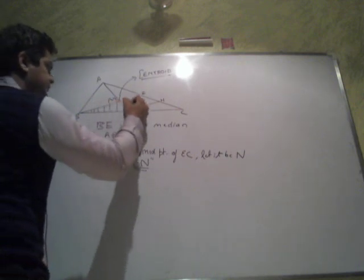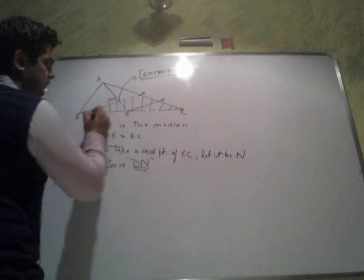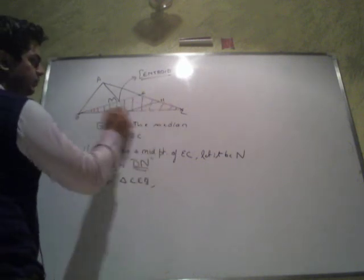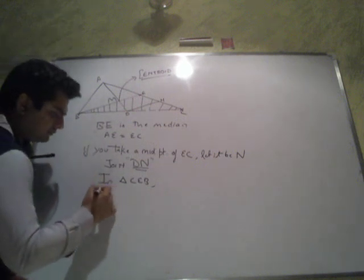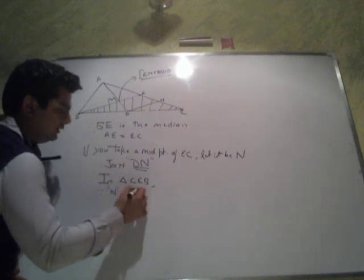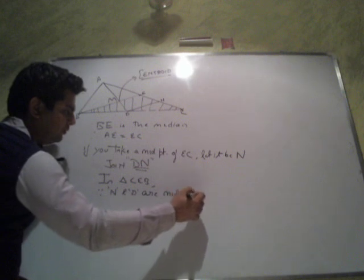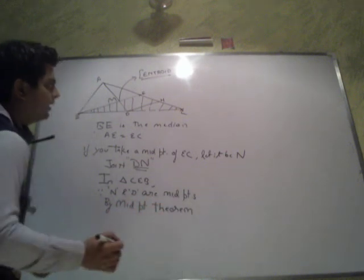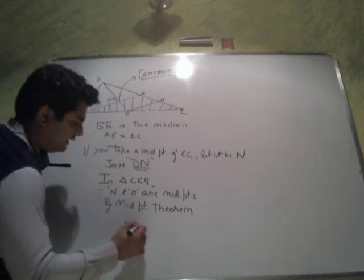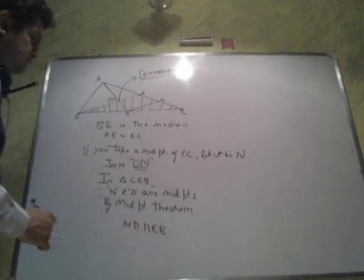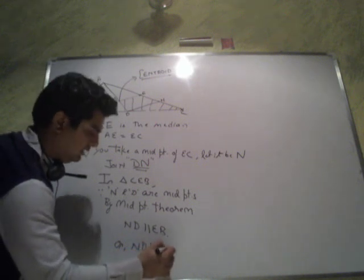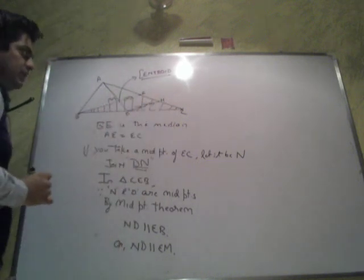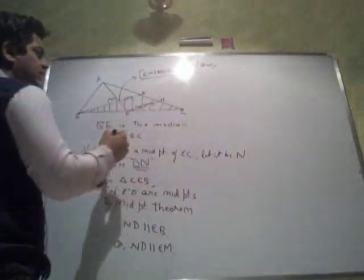If you carefully see this triangle — in triangle CEB, you can see that N and D are the two midpoints of two sides. Therefore, by the midpoint theorem, you can conclude that ND is parallel to EB, or equivalently ND is parallel to EM. That means this line is parallel to this line.